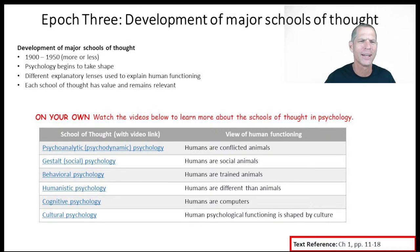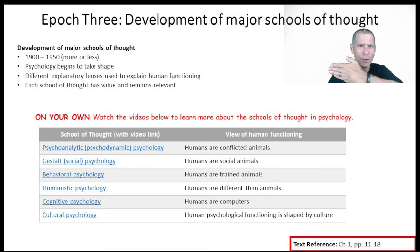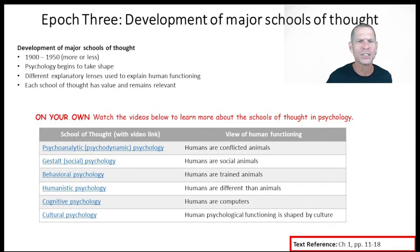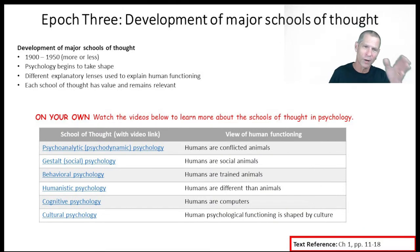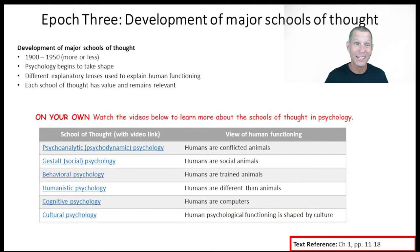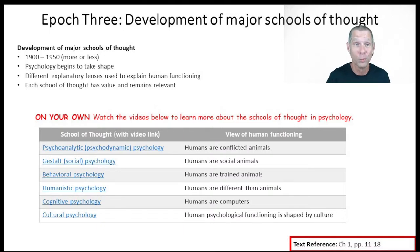Each of these schools of thought is valuable and still exists in the field of psychology. If you look over here, you'll notice I've got live links to short videos for each of these six perspectives. In completing your homework assignment, you might have to look at these links. In order to do the writing assignment for a grade of B or an A, you'll probably need to watch these short videos to appreciate these different schools of thought.